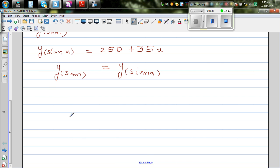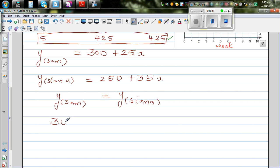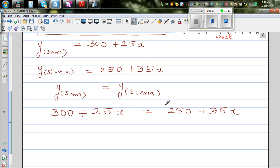When is y saving for Sam equal to y which is the saving of Sienna? So the equation would be 300 plus 25x is equal to 250 plus 35x. The technique to solve this type of equation is to bring the x's on one side and the numbers on the other side. So I'm going to take away 25x from this side.